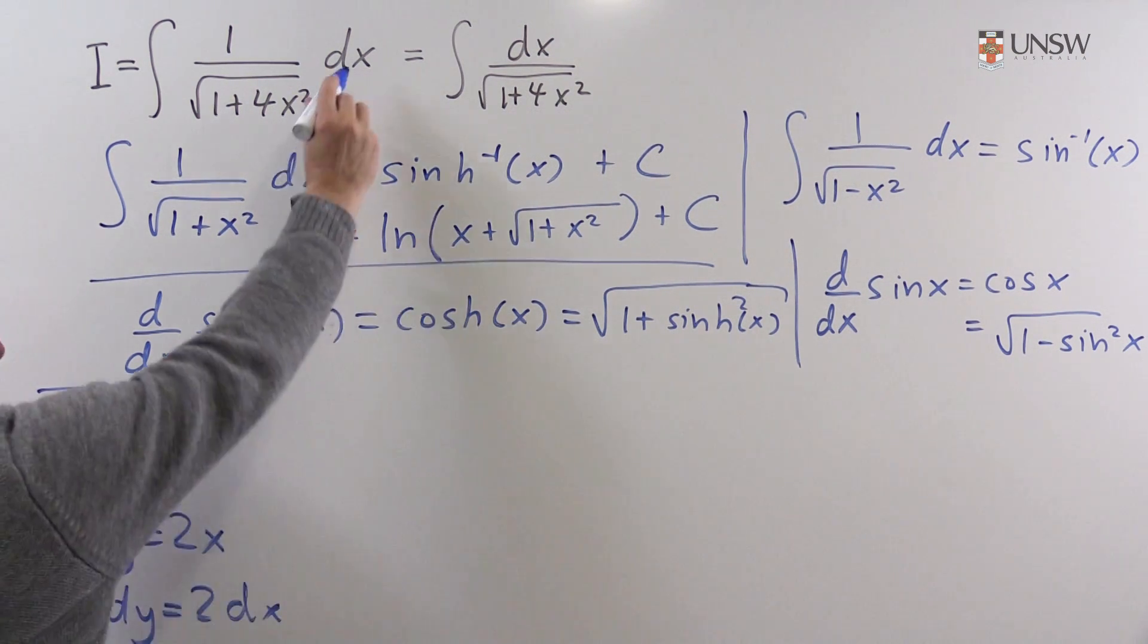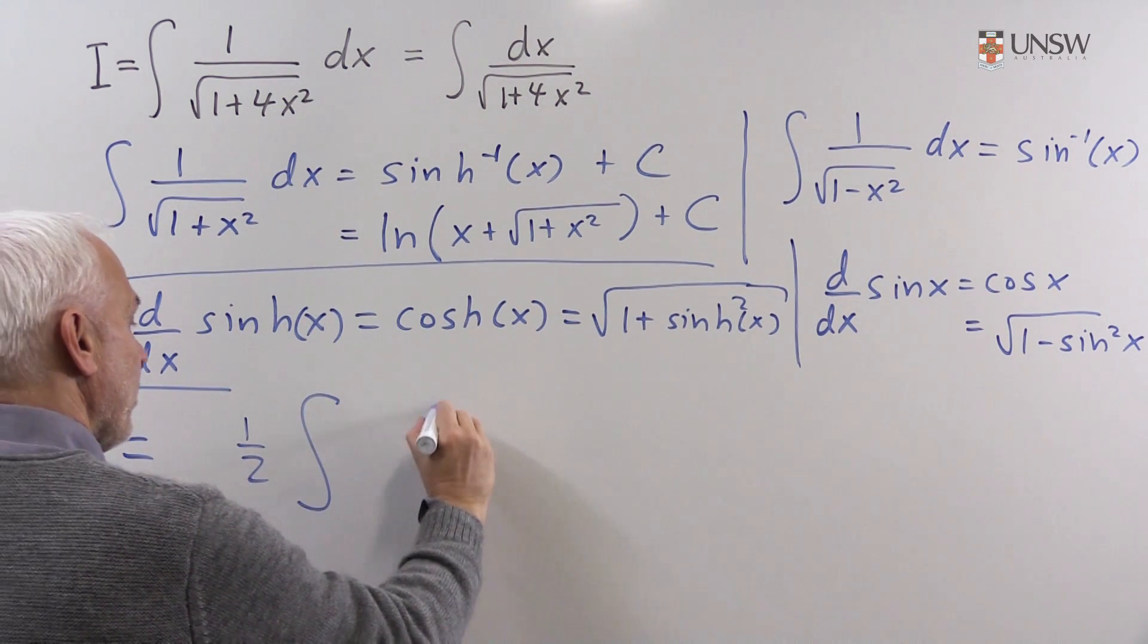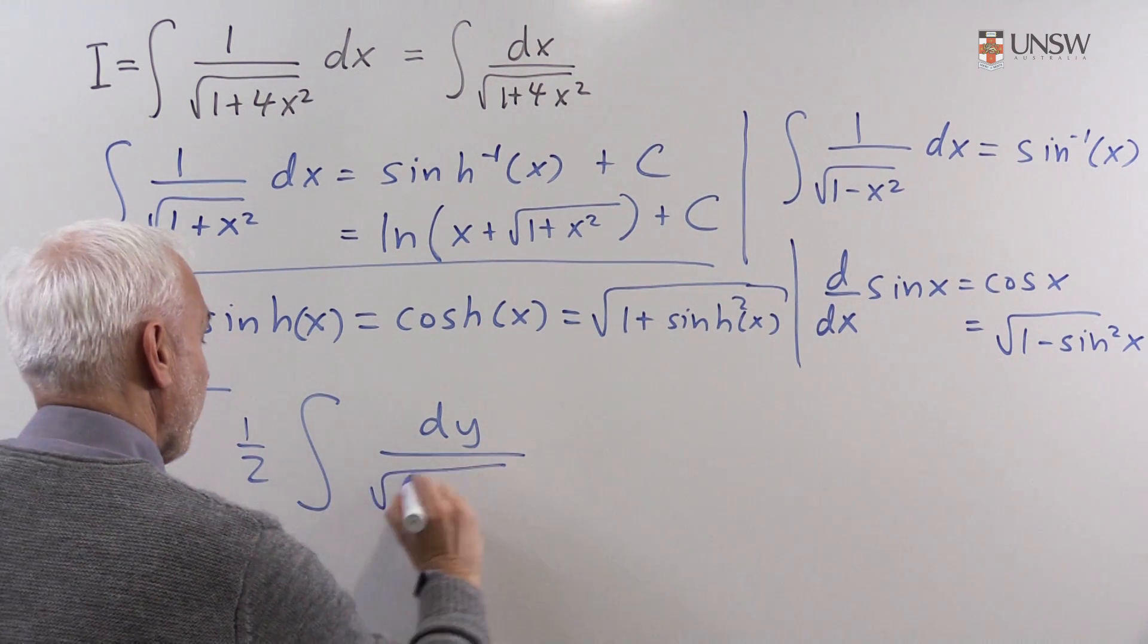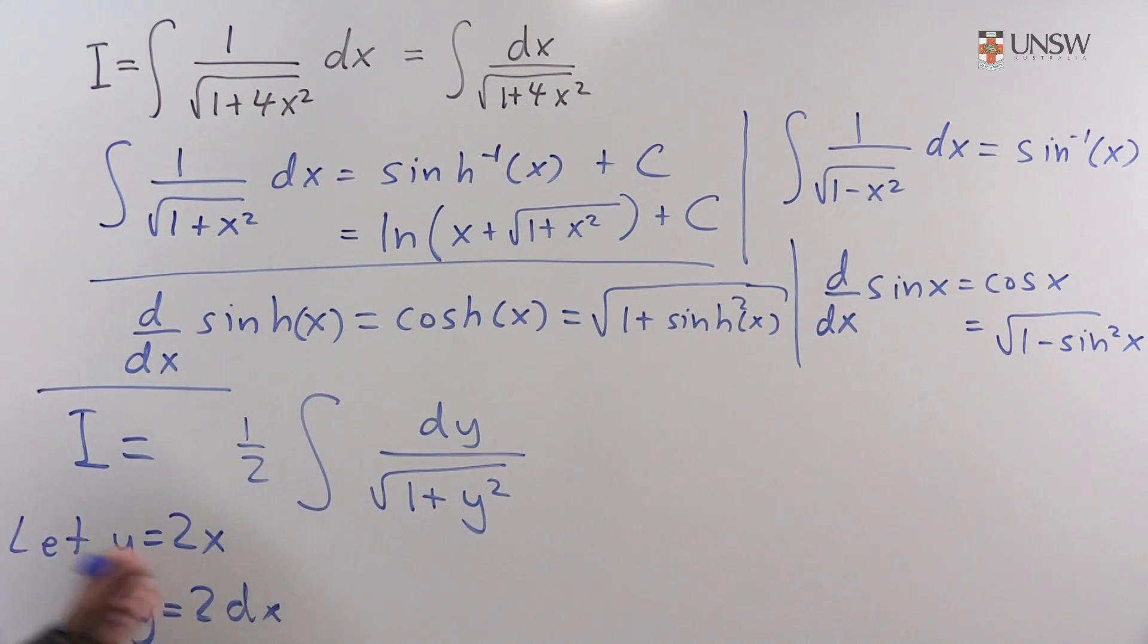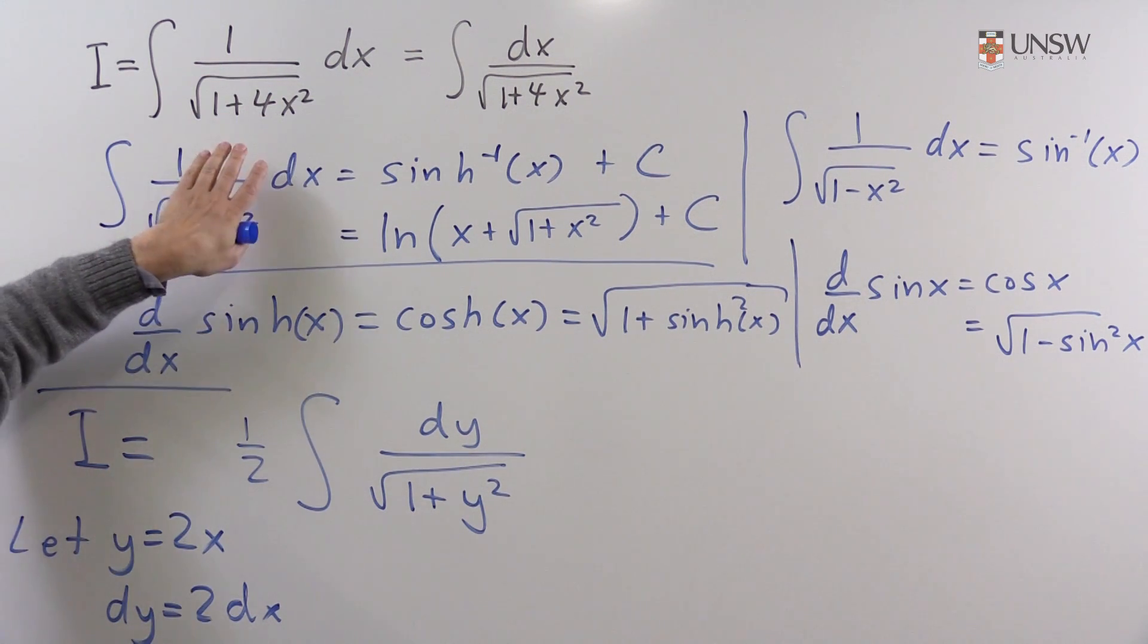Then we're going to get one half the integral. Instead of dx there'll be dy and on the bottom there'll be square root of 1 plus y squared, because the y is 2x. That's a basic trick to convert something like this into the standard form that we were talking about before.